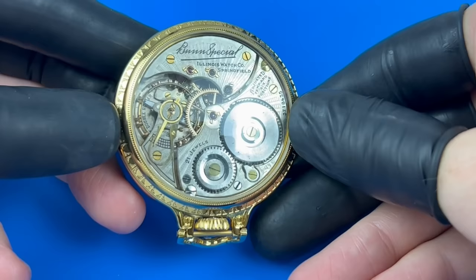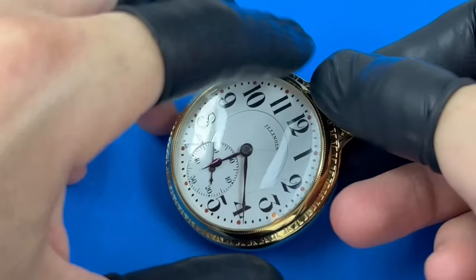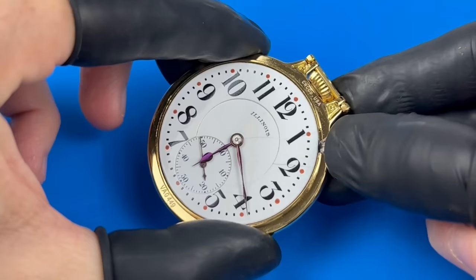The Bunn Special is Illinois Watch Company's most well-recognized railroad watch and is named after the Bunn family, who co-founded the original organization in 1870. This watch appears to be in overall excellent condition, but the movement has a major gremlin that isn't immediately apparent. As I've seen time and time again, appearances can be deceiving.